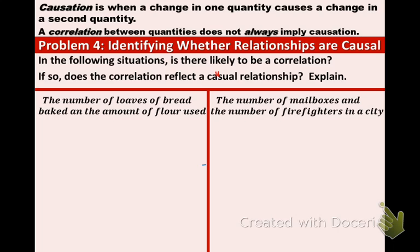Part A says the number of loaves of bread baked and the amount of flour used. So as the amount of flour used increases, the number of loaves of bread baked also increases. So this would be a positive correlation. Now the question is, is this a causal relationship? Does the amount of flour used affect or cause the number of loaves of bread to change? And the answer to that question is yes, it is a causal relationship. One affects the other.